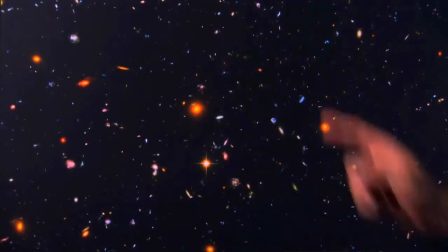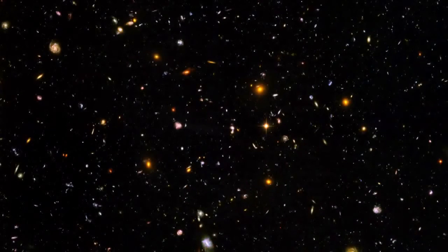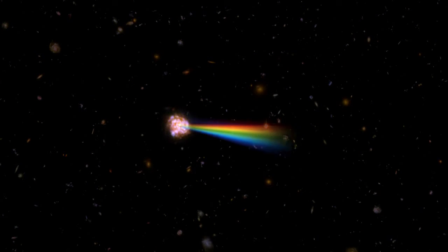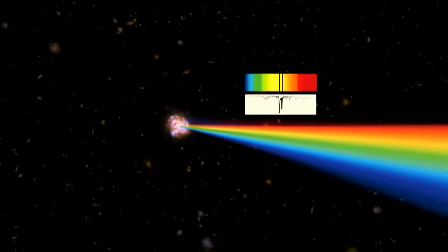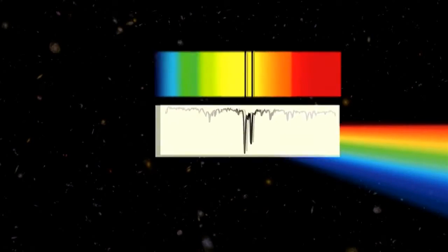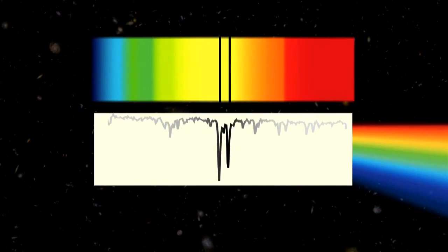A spectrograph can take the light of one of its objects and divide it in its colors. An astronomer can study how much light is present in each color. This is what we call a spectrum and this is why NIRSPEC is called a spectrograph.